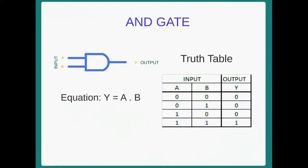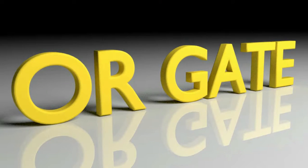First we will discuss about AND gate. Two inputs are there. One input is A and another is B. The output is Y. Truth table: for input 0, 0, output is 0. For input 0, 1, output is 0. For input 1, 0, output is 0. For input 1, 1, output is 1. Equation: Y equal to A AND B.